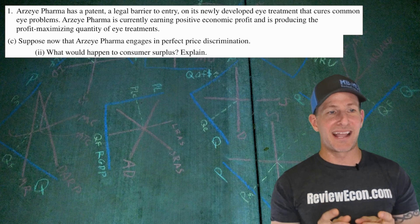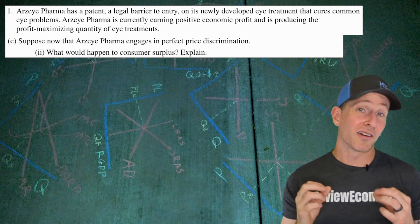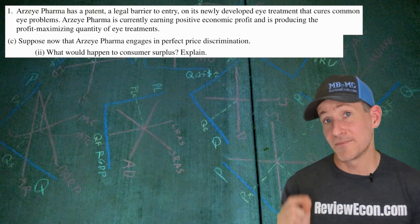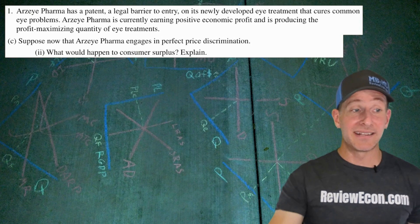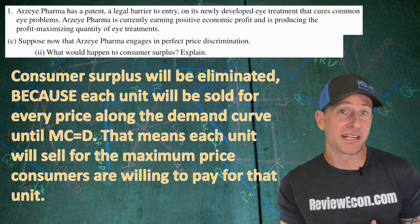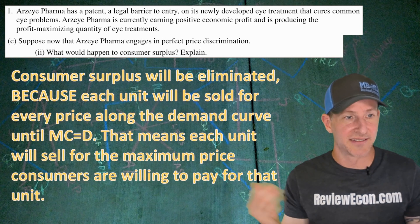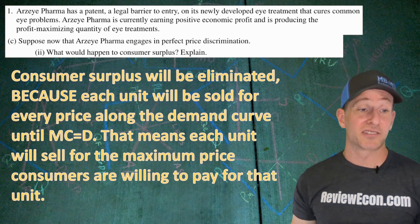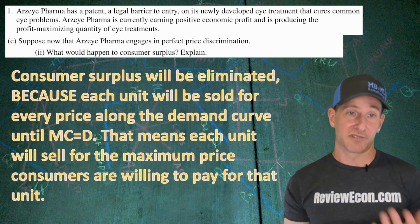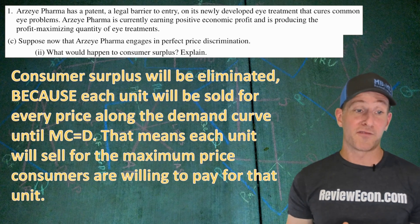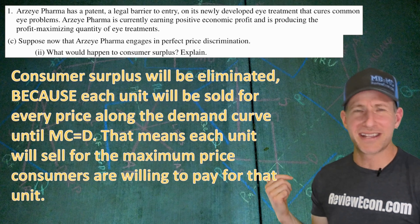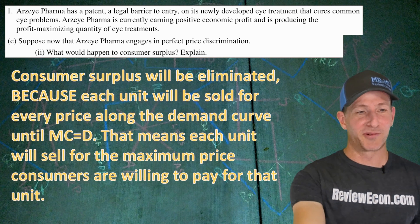What would happen to consumer surplus? Explain. When they are perfectly price discriminating, they are charging every single consumer the maximum price they'd be willing to pay. That means consumer surplus will be eliminated — it'll be zero. I'm not sure if just 'decrease' will be enough; we'll have to see what the rubric says. Each unit will be sold for the maximum price consumers are willing to pay for that unit.